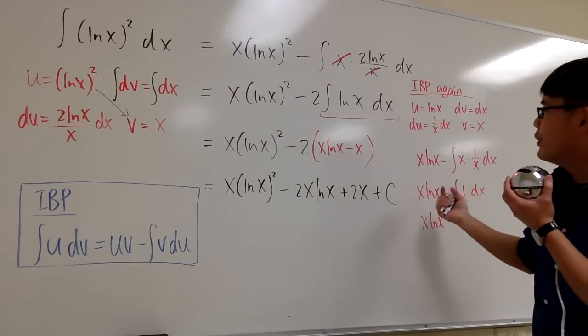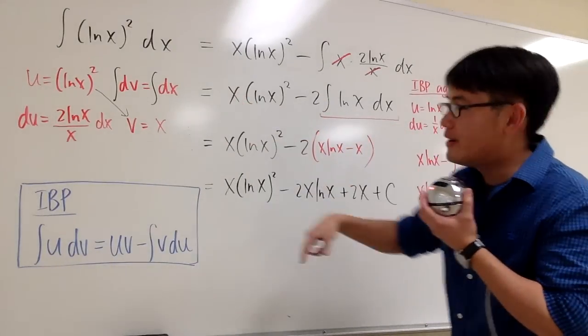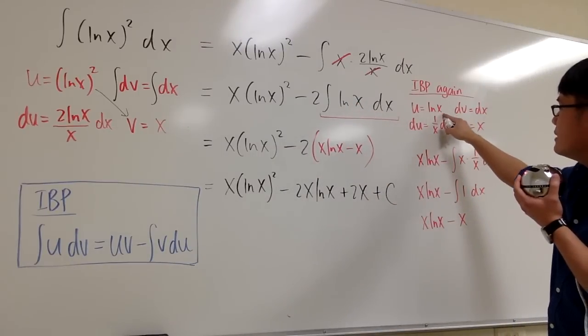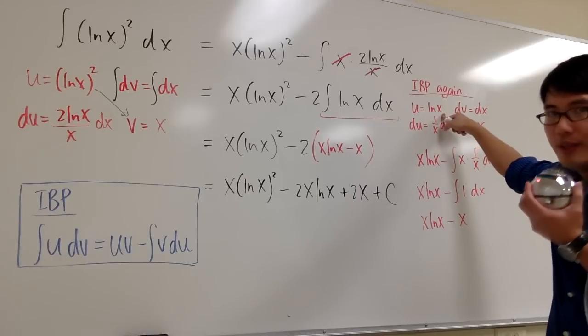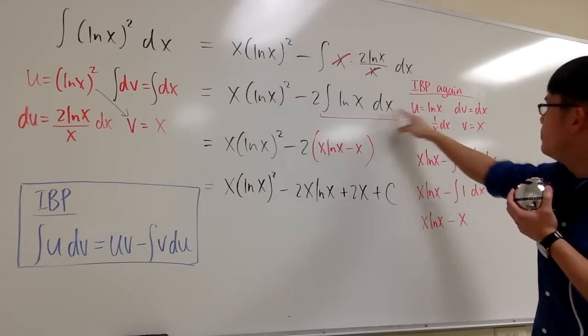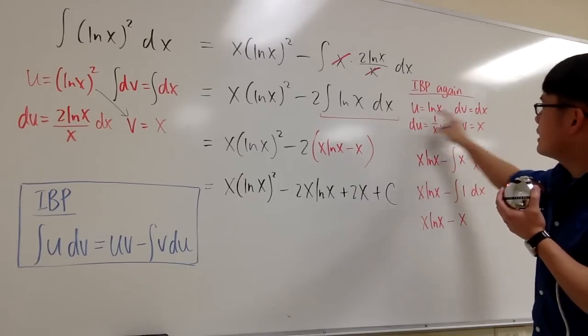So let me just go through this real quick. It's pretty much the same idea right here. To integrate ln x, we will pick u equals ln x, because we can differentiate that, right? And then we'll pick dv equals dx.